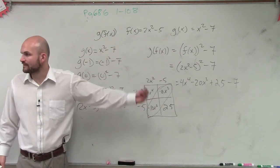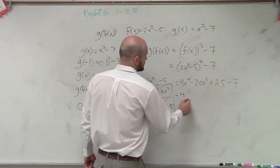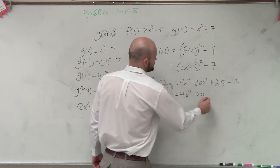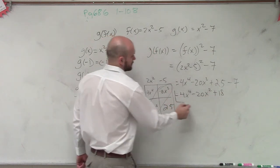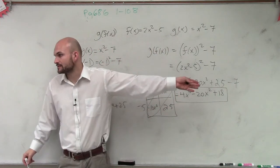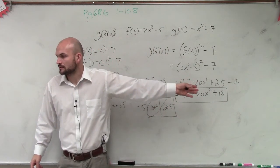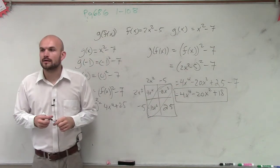But we can simplify 25 minus 7 to be 18. So therefore, my final answer is 4x to the fourth minus 20x squared plus 18. Well, it's 25 minus 7. Got it. Cool. Any questions? Good.